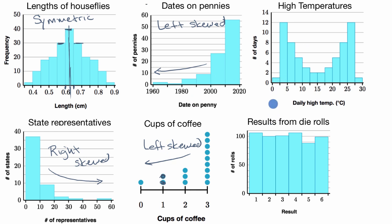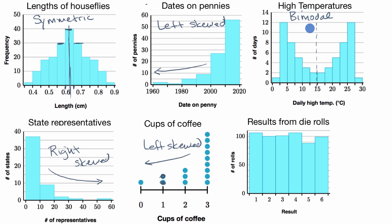These next two distributions are interesting. This one shows the number of days with different high temperatures, and it looks roughly — or even exactly — symmetric. But when you see two peaks like this, it would typically be called a bimodal distribution. Even though bimodal distributions can sometimes be symmetric, you want to be more precise: the 'bi' comes from those two peaks. This makes sense because you have many warm days in summer and many cold days in winter.